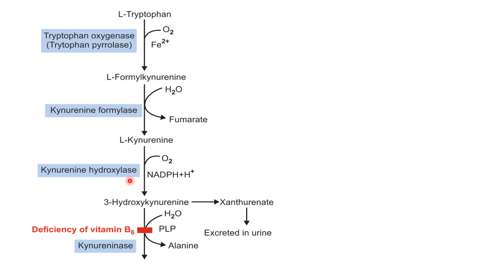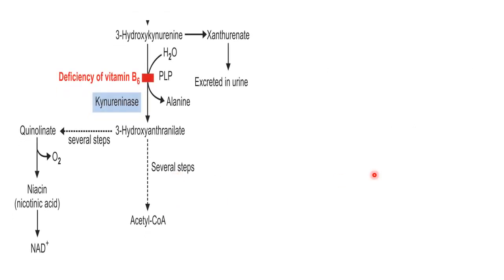L-kynurenine gets hydroxylated with the help of kynurenine hydroxylase enzyme into 3-hydroxy kynurenine. This, in the presence of pyridoxal phosphate as a coenzyme, with the help of kynurenase enzyme, gets converted to 3-hydroxy anthranilate. If there is a deficiency of vitamin B6 (pyridoxine), there will be no conversion of 3-hydroxy kynurenine to 3-hydroxy anthranilate, and 3-hydroxy kynurenine will instead be converted to xanthurenate, which is excreted in urine.